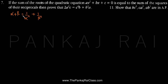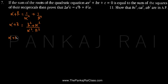We have been given that alpha plus beta is equal to 1 by alpha square plus 1 by beta square. Let me cross multiply these two terms. So it will be alpha plus beta is equal to beta square plus alpha square divided by alpha square into beta square. Let me take this term completely over the left hand side. So this will be alpha plus beta multiplied by alpha square into beta square, which I can write as alpha plus beta multiplied by alpha beta whole square, equal to alpha square plus beta square.